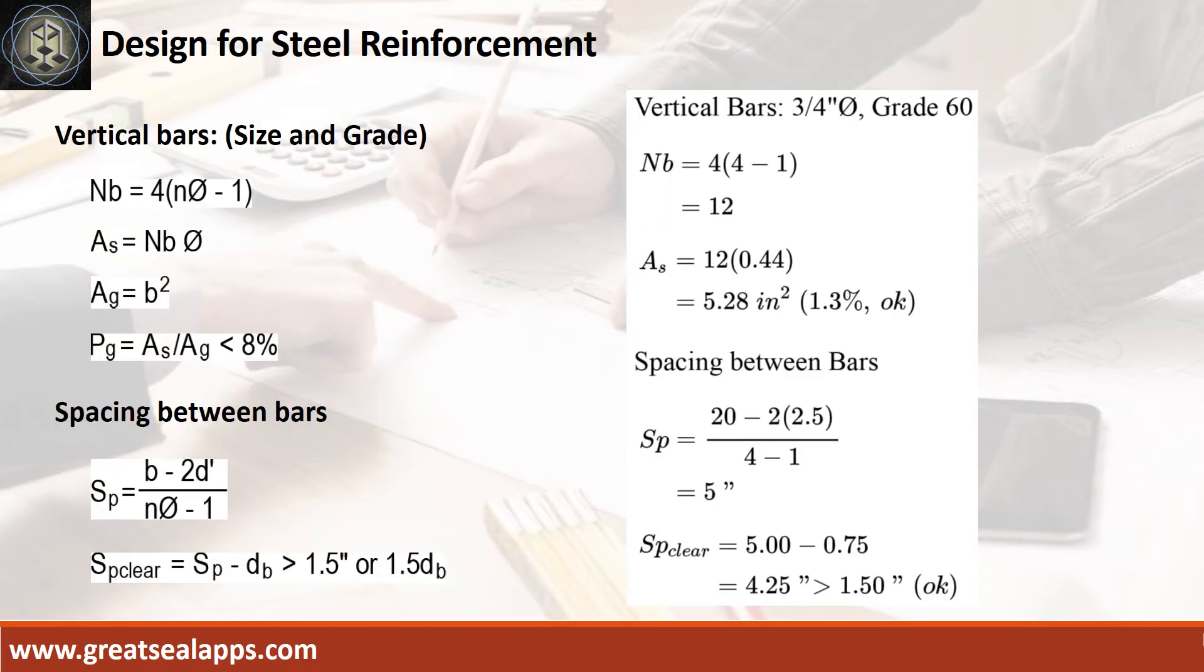Given 12 pieces of 3/4 inch diameter vertical bars, the area of steel is 5.28 square inches with steel ratio of 1.3%, and the spacing between bars is 5 inches for 4.25 inches clear spacing.